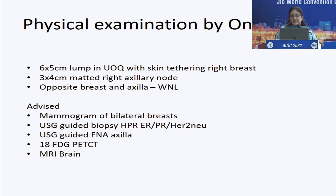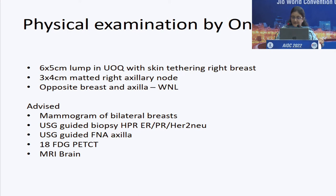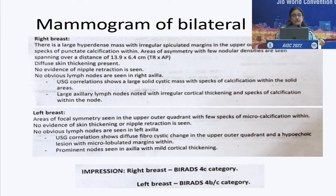Physical examination by the oncologist found nodules in both breasts. She was advised a mammogram, ultrasound-guided biopsy, PET scan, and MRI brain. To our utter shock, she was actually having breast carcinoma in both breasts, with metastasis involving all parts of her body — spinal cord, bones, liver, and brain. Bilateral invasive ductal carcinoma grade 3 was the diagnosis on histopathology.